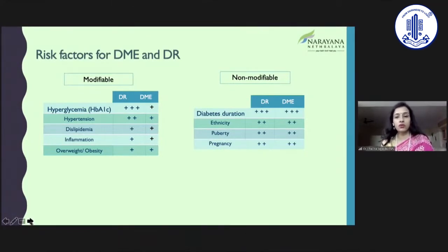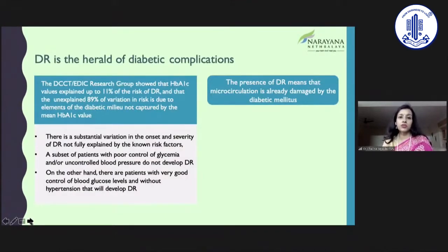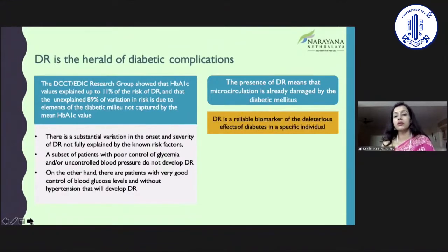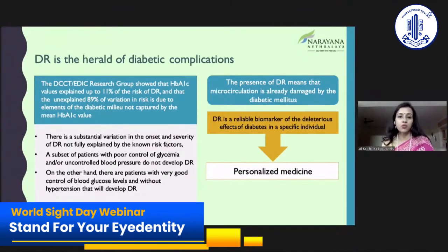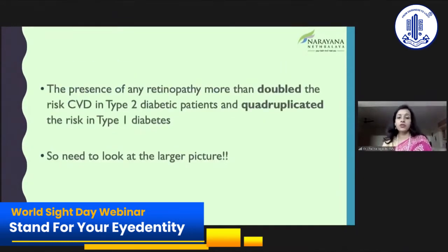Patients may say their diabetes is absolutely under control with HbA1C of 6 or 5.5, but the point is they may have been diabetic for 30 or 40 years — that itself is a non-modifiable risk factor. Both HbA1C and diabetes duration have a high influence on the prevalence of DME. Diabetic retinopathy is also a herald of other complications; once we see it, we need to screen for nephropathy, neuropathy, cardiovascular and cerebrovascular disease. The presence of retinopathy more than doubled the risk of cardiovascular disease in type 2 diabetic patients and made it four times higher in type 1.